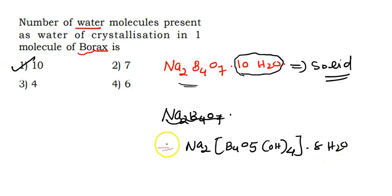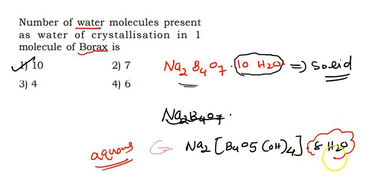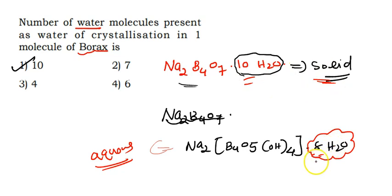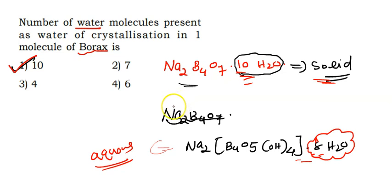The crystalline form of borax has 10 water molecules, while the aqueous form has 8 water molecules. Since the question asks about the solid crystalline form, the answer is 10. If you found this useful, please share with your friends. Thank you so much.